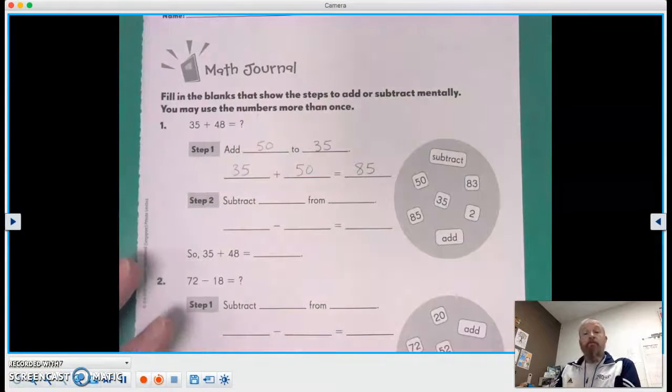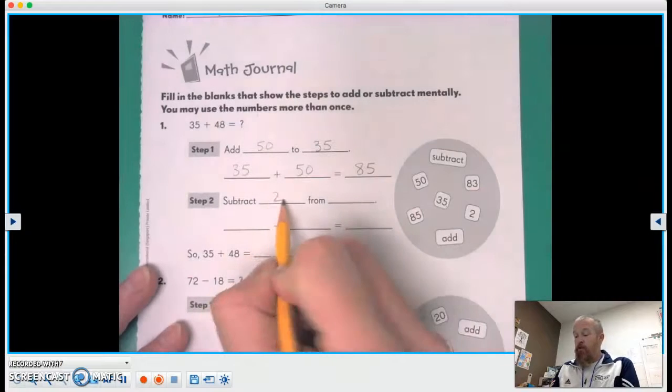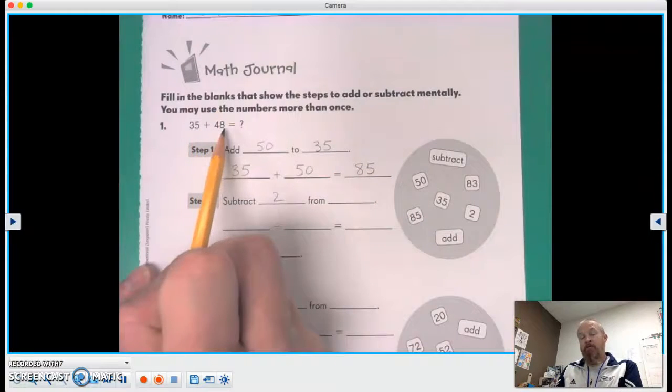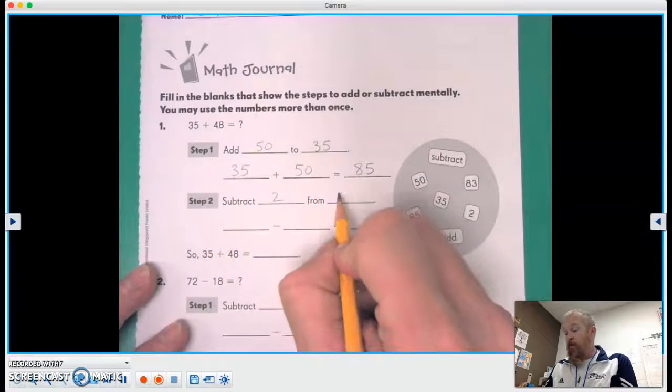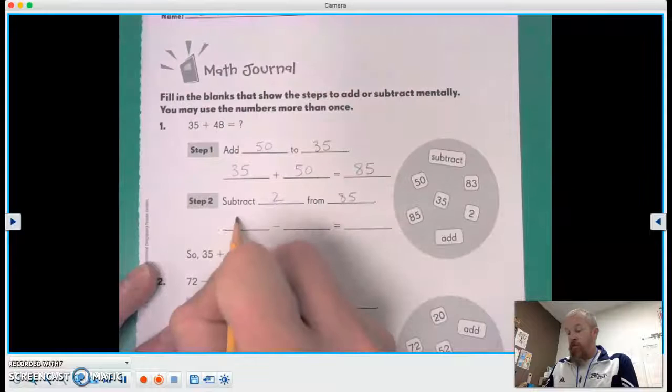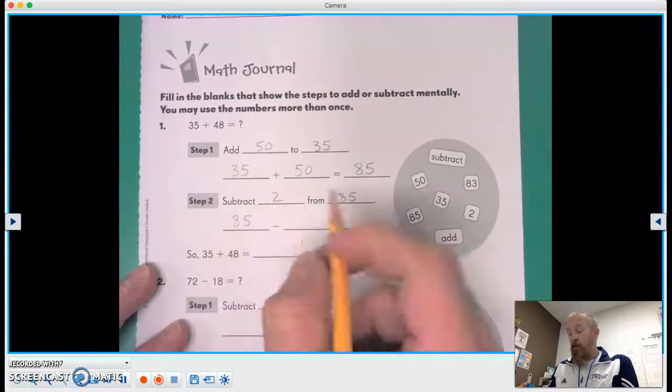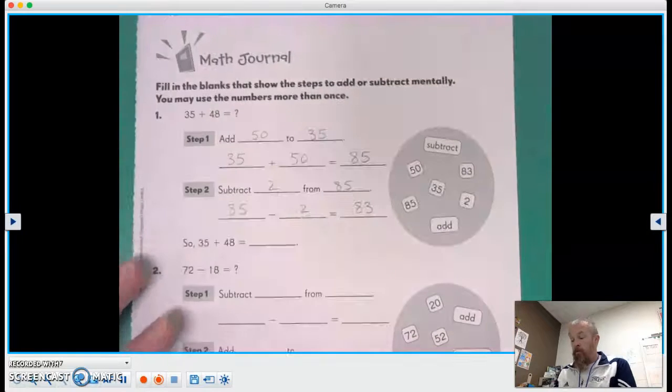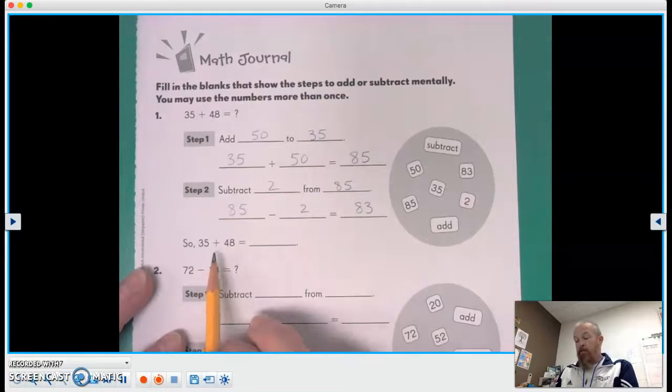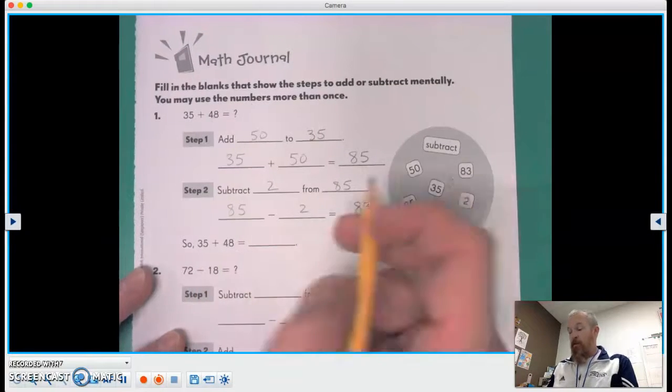And now we're gonna subtract two. We have to subtract our two because that was the difference between the 48 and the 50. So we subtract two from 85. So 85 minus two equals 83. So 35 plus 48 equals 83.